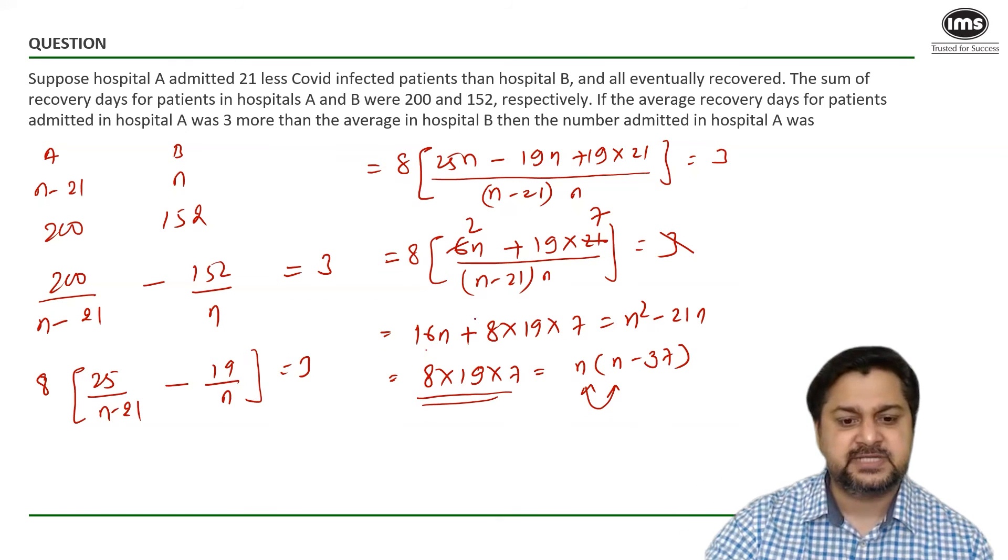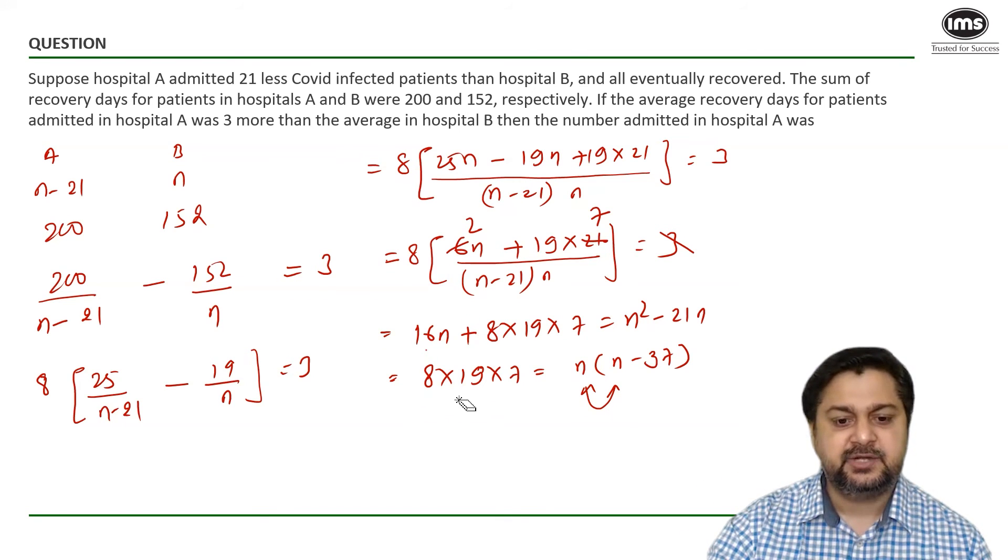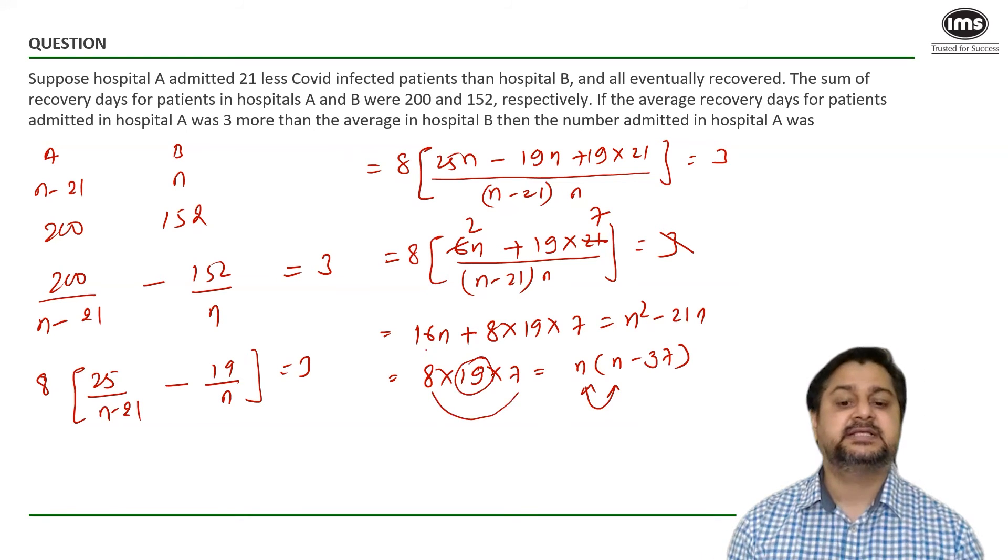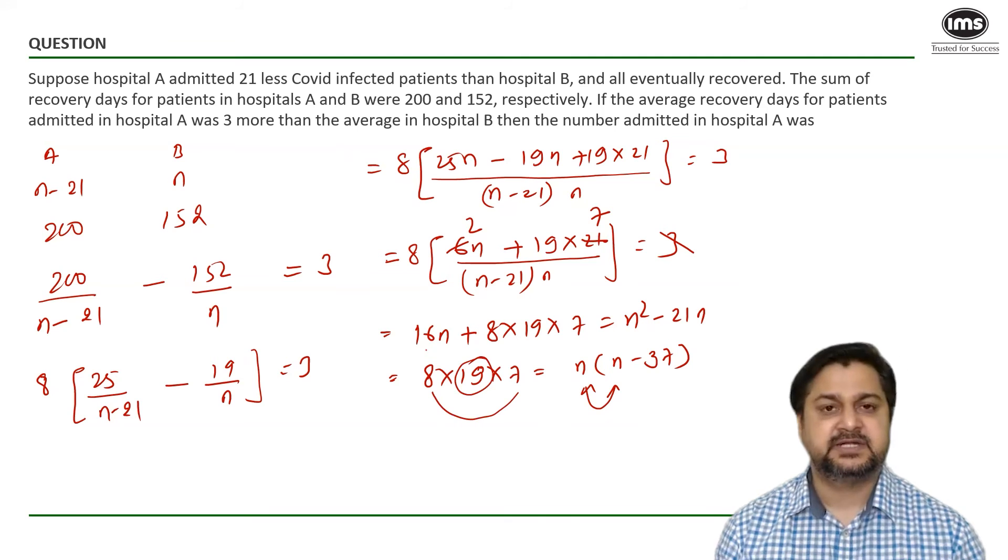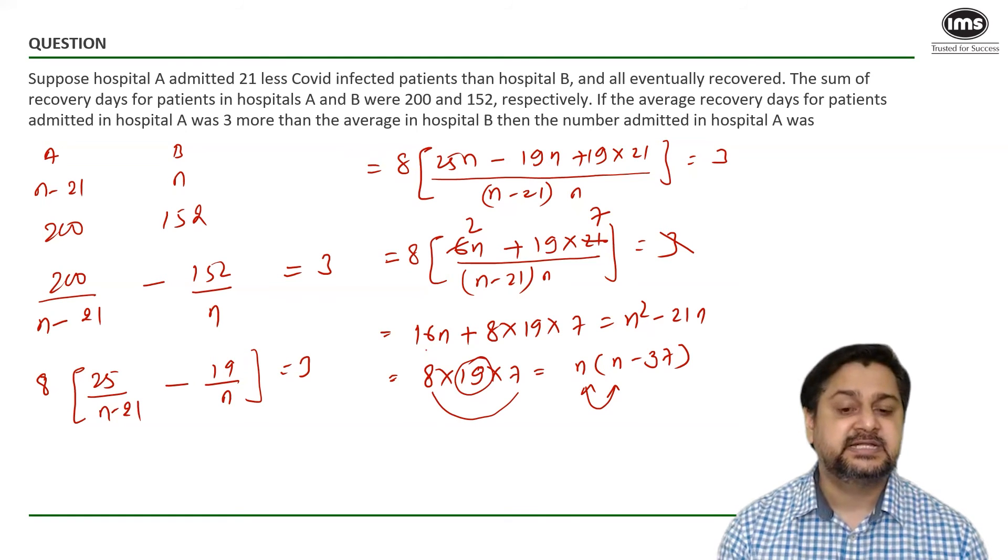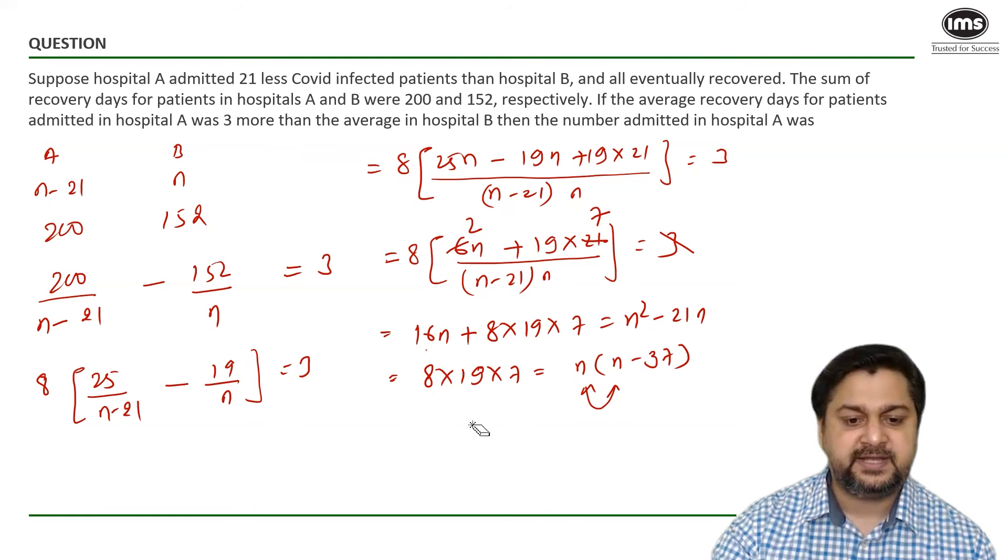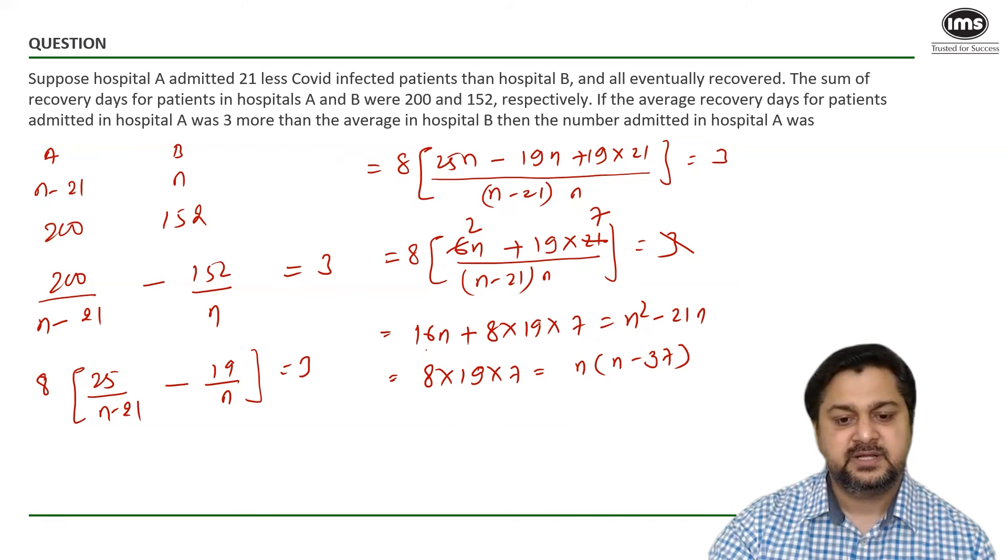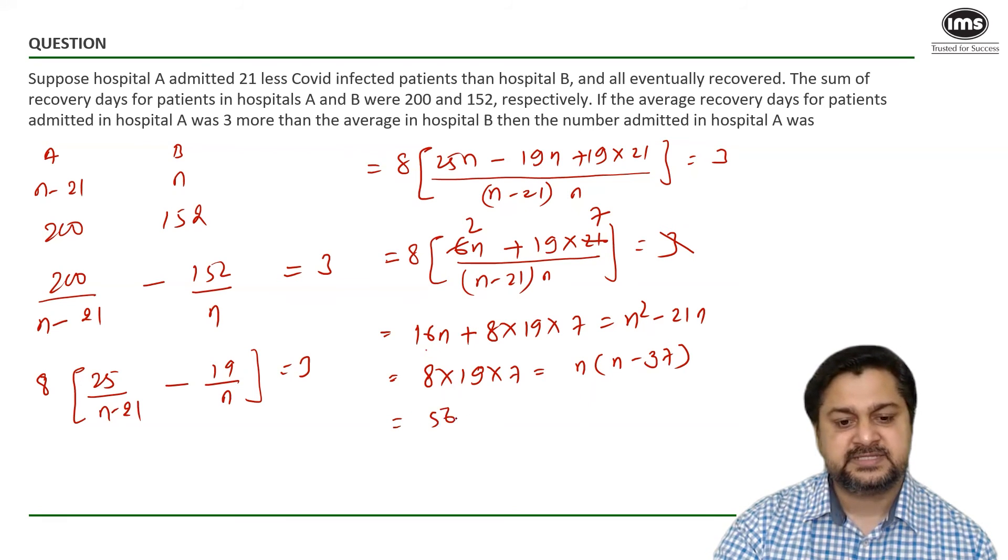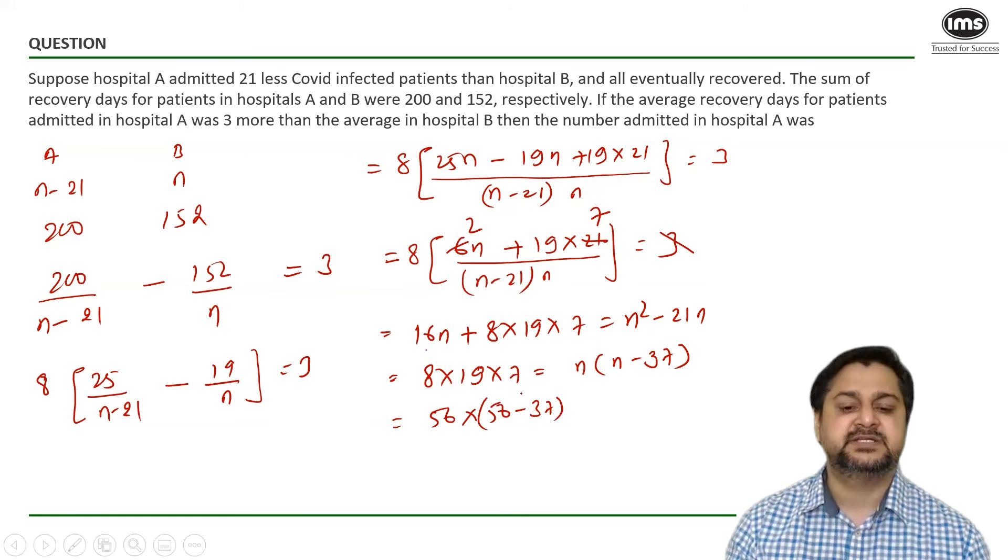If you observe minutely you will see that 8 into 7 is 56. And 56 minus 19 is 37. That means the difference between 56 and 19 is 37. So if you want to write in a structured format this can be written as 56 into 56 minus 37.